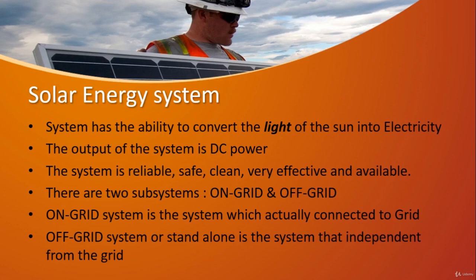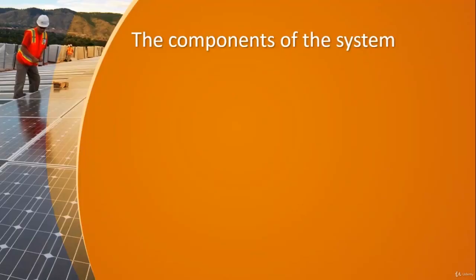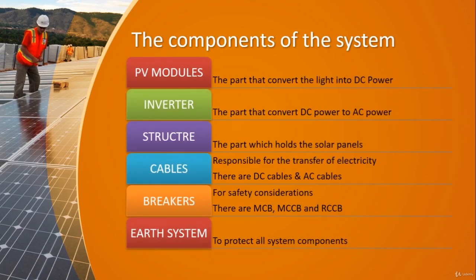So the solar energy system converts the light of the Sun into electricity through its components. PV modules are the part that convert the light into DC power.